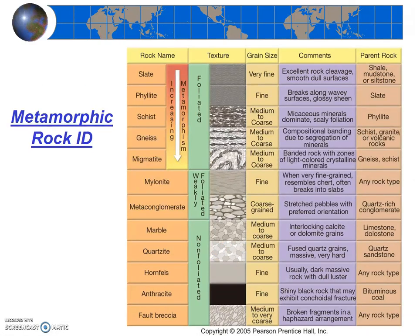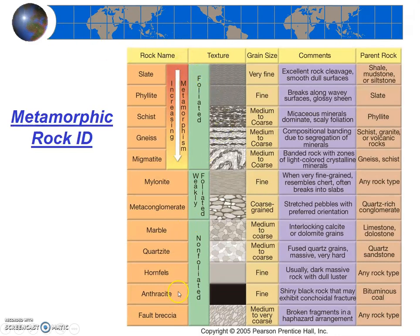How do we identify metamorphic rocks? Just like igneous and sedimentary rocks, we look at the rock's texture and mineral composition. Many, but not all, metamorphic rocks contain layers of crystals — this is called a foliated texture. It's different from the randomly oriented crystals of igneous rocks, and different from the layers in sedimentary rocks, which are made of pieces of shells, gravels, or sands. In metamorphic rocks, these layers are made of crystals. When identifying metamorphic rocks, we first determine if there is foliation, then use mineral composition to determine the rock's name.